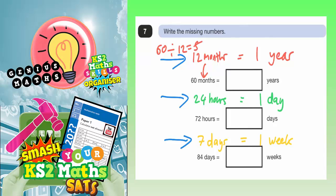So 60 months divided into lots of 12 months would give you 5 lots. So 5 lots of 12 months would be 5 years. So your answer to the first one is 5.